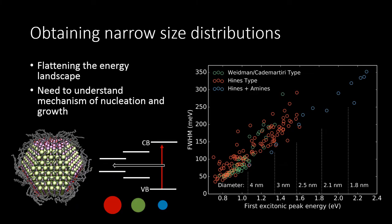A pervasive goal of nanoparticle synthesis is the attainment of narrow size distributions, both out of fundamental interest and device applications where a flat energy landscape is correlated to performance. For PbS nanocrystals, we usually quantify the size distribution by looking at the full width at half max of the first excitonic peak of the absorption spectrum. Given a certain size or bandgap energy, we would like to synthesize nanoparticle ensembles at the minimum of the curve shown to the right, which shows the best literature reports of the full width at half max versus size. To reproducibly achieve such synthesis, we need to better understand the mechanisms of nucleation and growth.